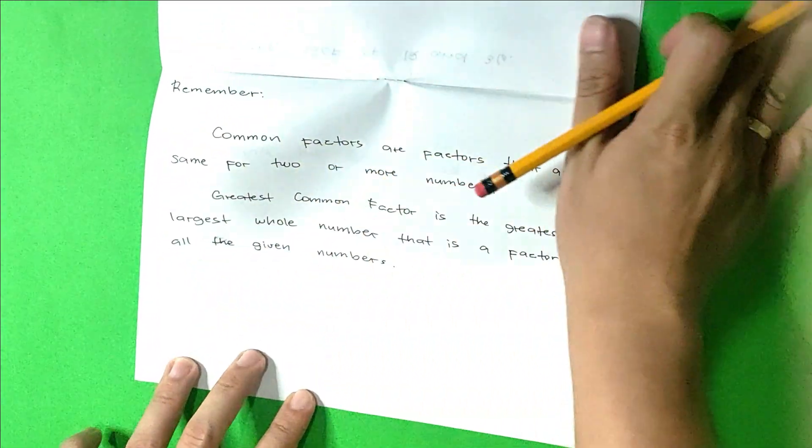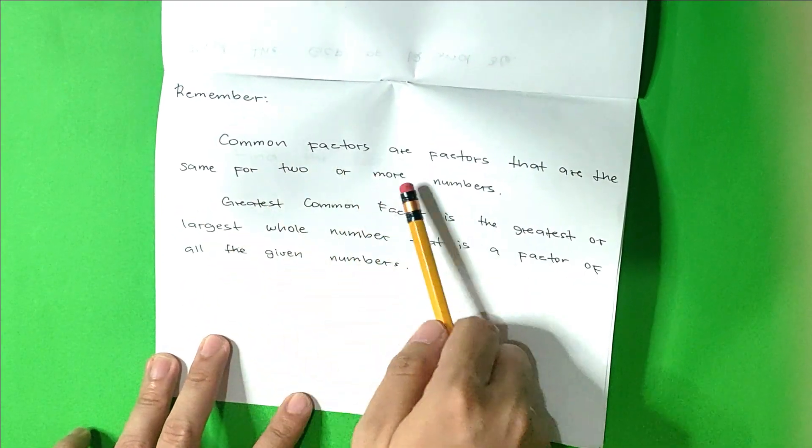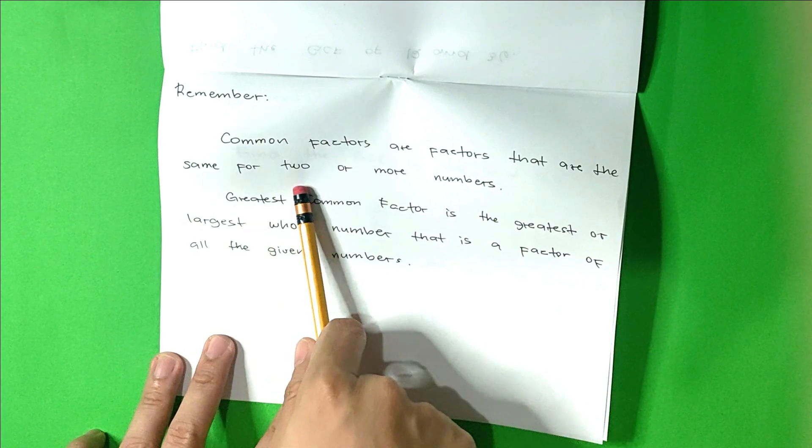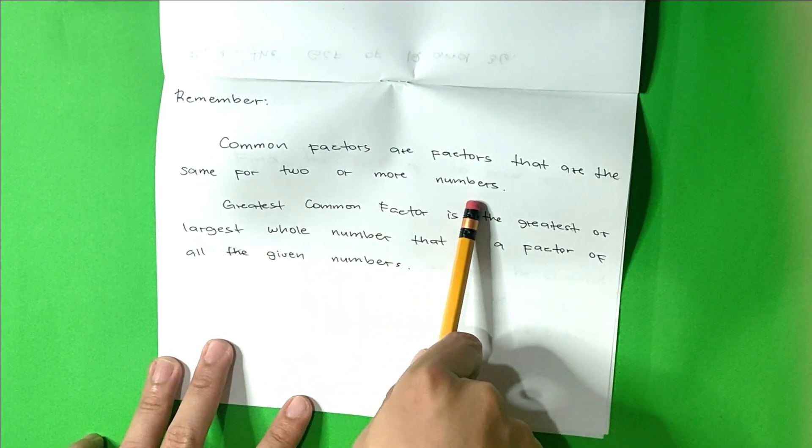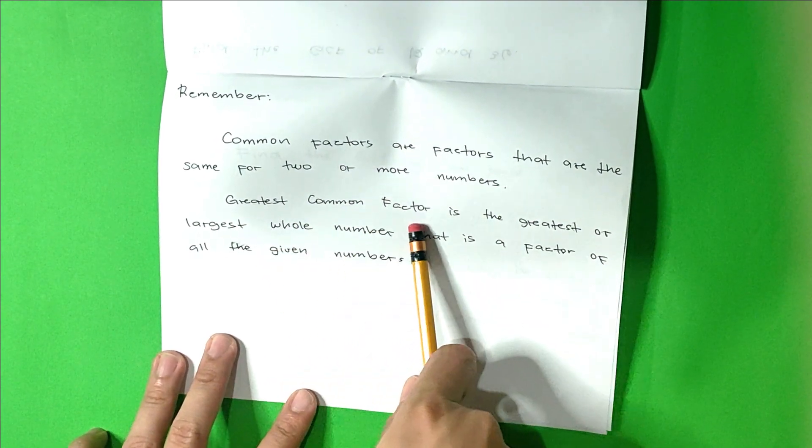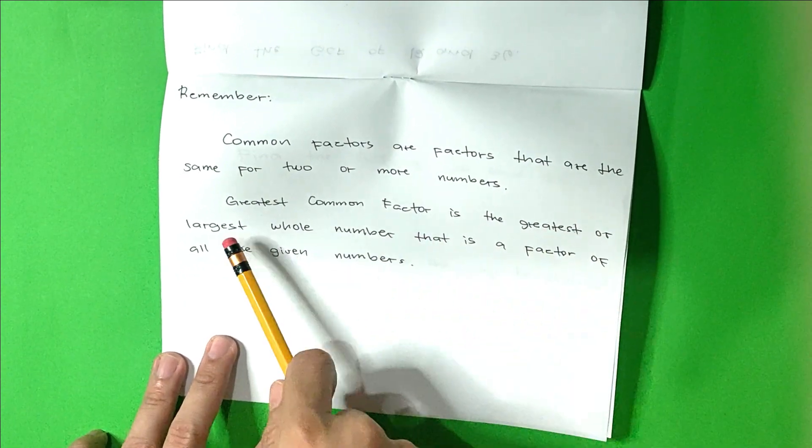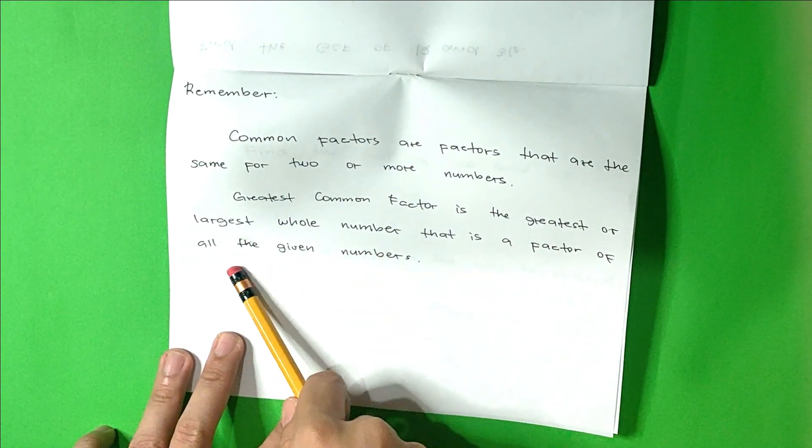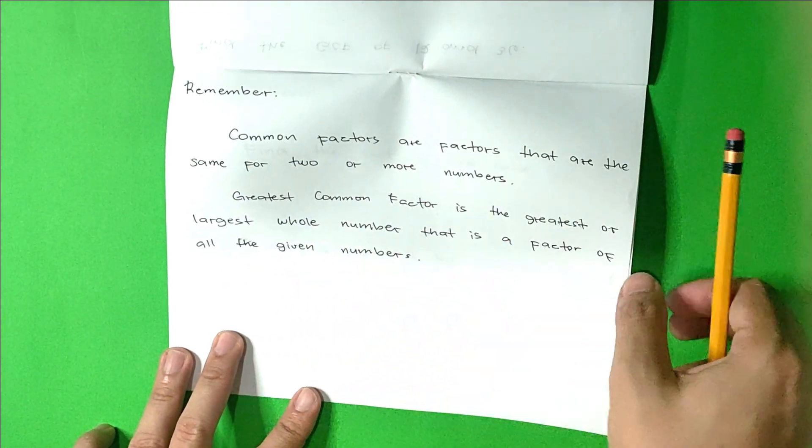Remember, common factors are factors that are the same for 2 or more numbers. The greatest common factor is the greatest or largest whole number that is a factor of all the given numbers.